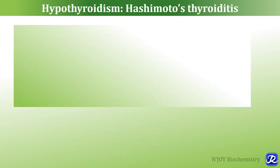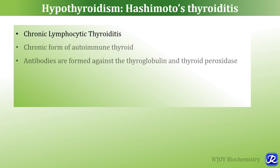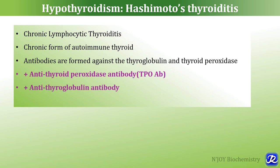Hashimoto's thyroiditis is the most important cause of hypothyroidism. It is a chronic lymphocytic thyroiditis — a chronic form of autoimmune thyroid disease where antibodies are formed against thyroglobulin and the enzyme thyroid peroxidase. Patients have antithyroid peroxidase antibodies and antithyroglobulin antibodies. In this condition, thyroid cells are damaged, leading to hypothyroidism.